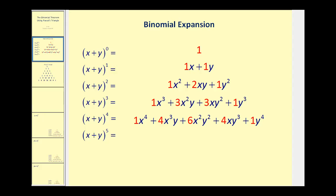The first two rows should be pretty obvious. Anything to the zero power is equal to one, and then anything raised to the first power is just equal to itself. However, notice we are including the coefficients here, and I'll show you why in just a moment.